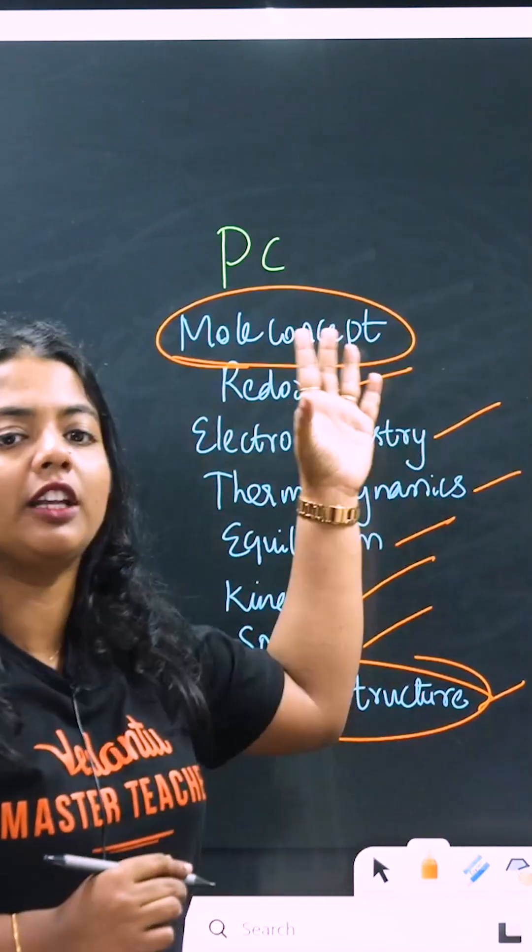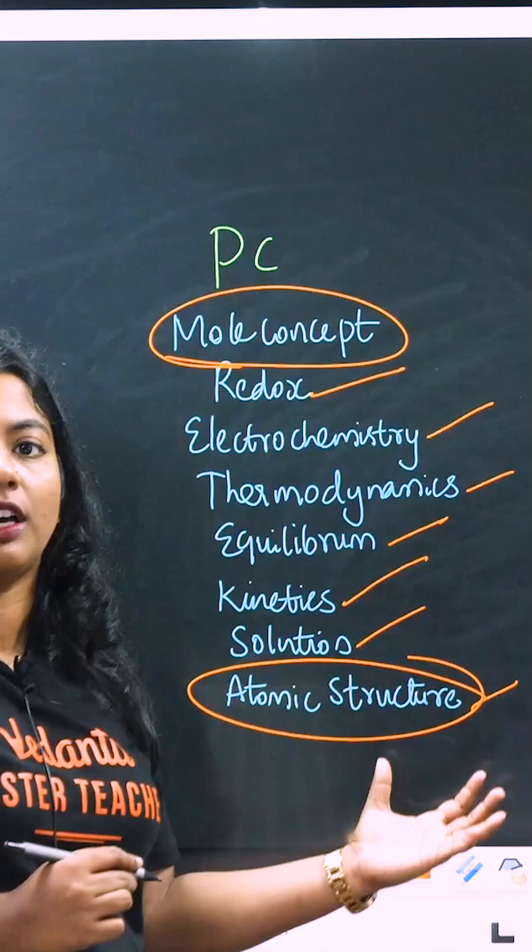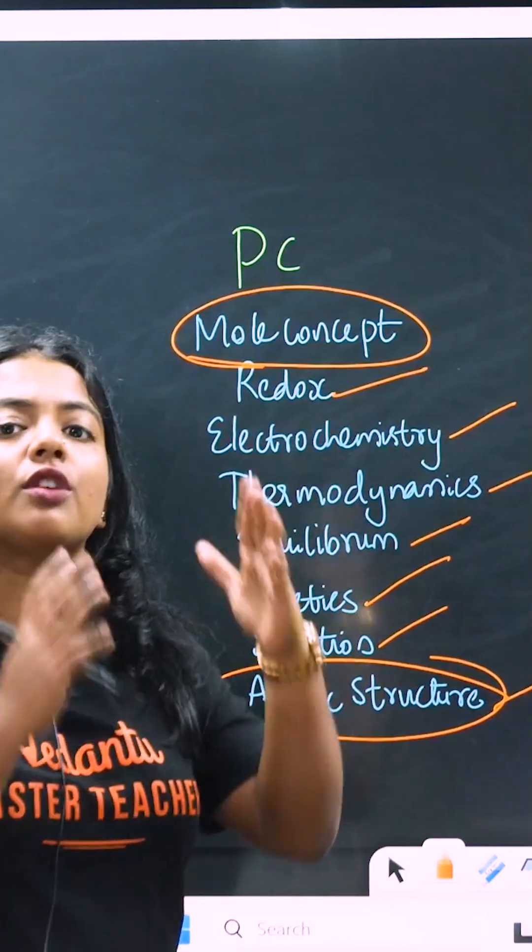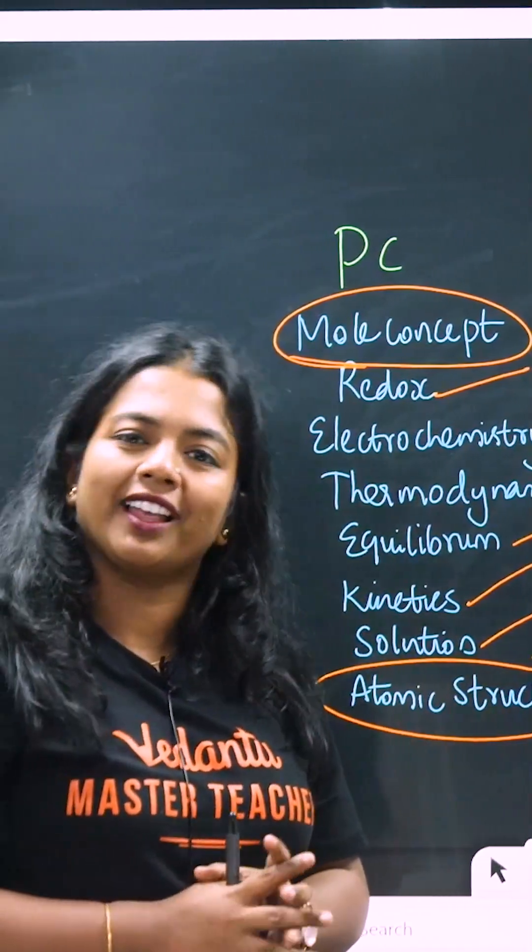So always start with the mole concept, then go for redox and other chapters, and always choose atomic structure last. This is the best order to revise or study physical chemistry. Okay? Thank you.